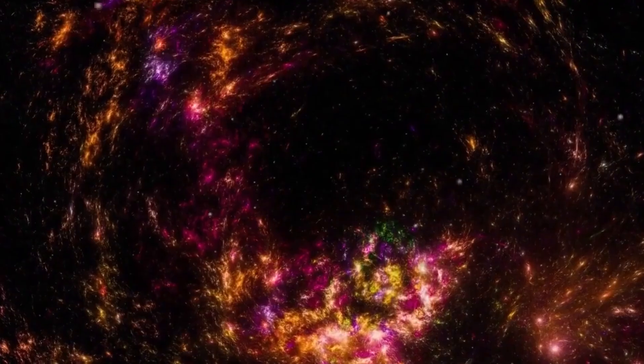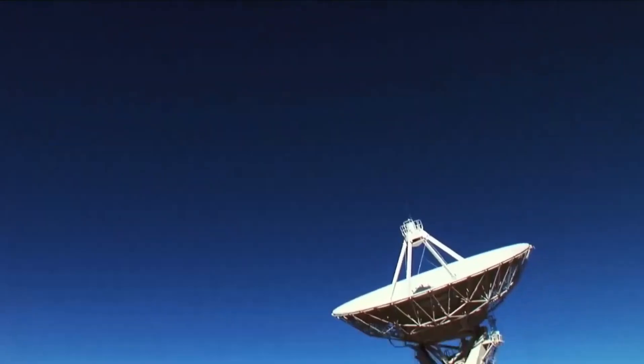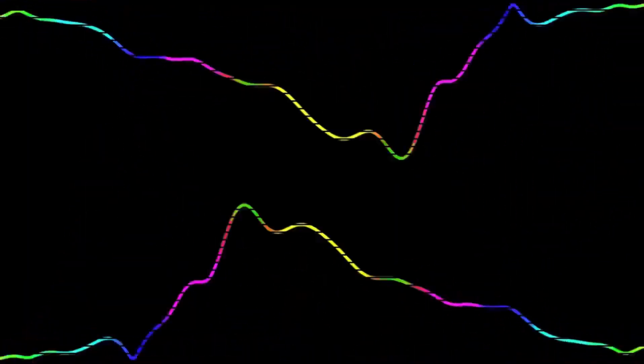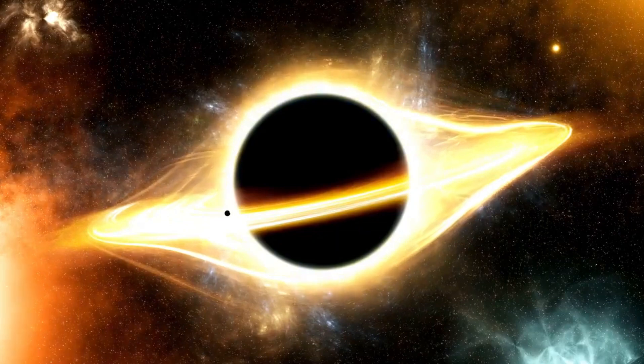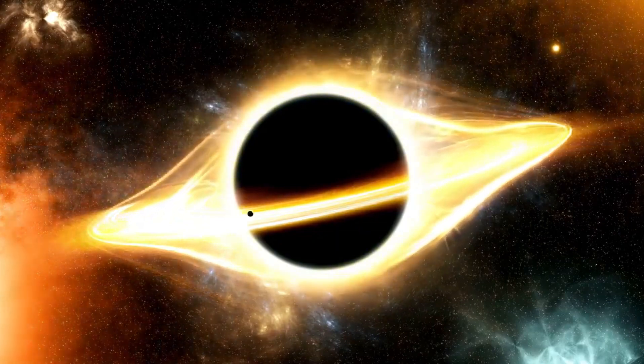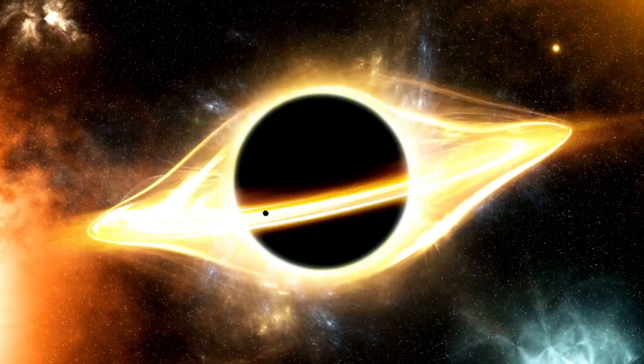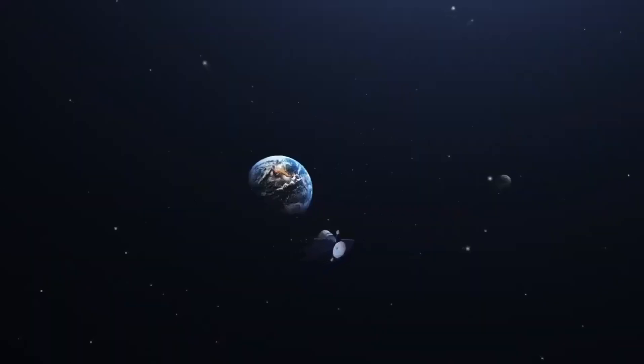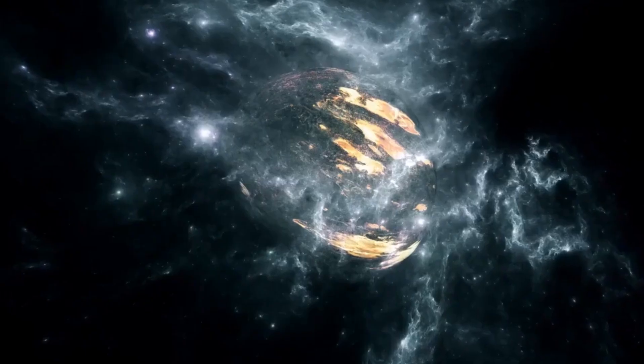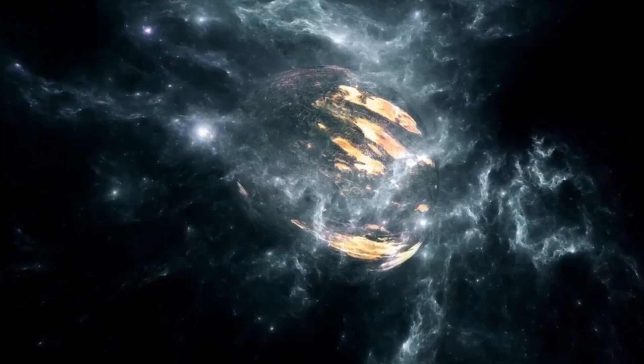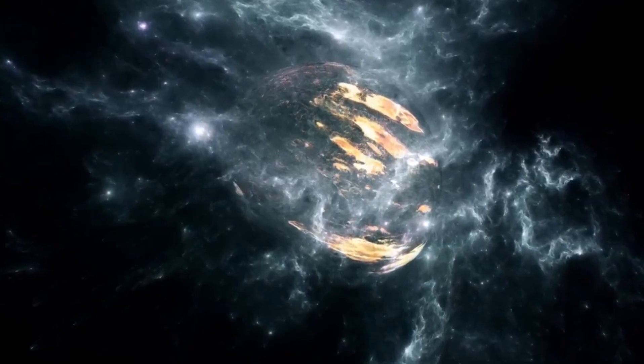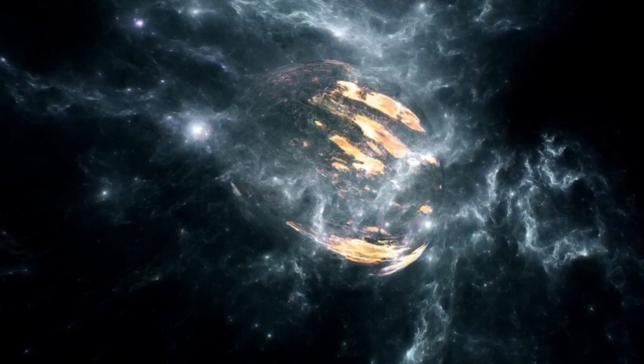Betelgeuse is a red supergiant, a type of star that is in the final stages of its life. These massive stars burn through their nuclear fuel at an incredible rate, fusing lighter elements into heavier ones in their cores. Over time, the core of a red supergiant becomes layered like an onion, with shells of hydrogen, helium, carbon, oxygen, and other elements surrounding a dense core of iron. When the core can no longer support the star's immense weight, it collapses under its own gravity, triggering a supernova explosion. This explosion is one of the most energetic events in the universe, releasing an enormous amount of light and radiation that can outshine entire galaxies for a brief period.